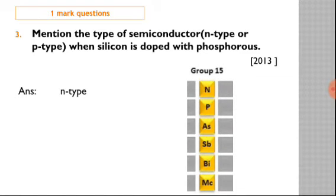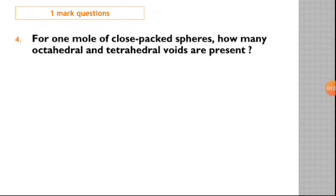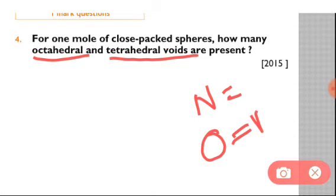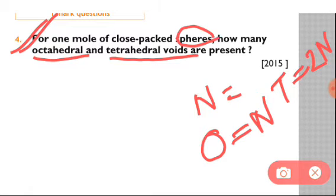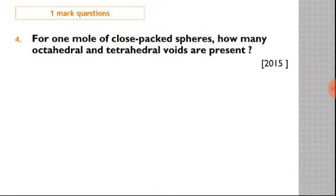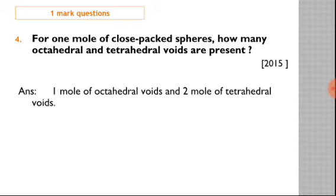Question number four is for one mole of close-packed spheres, how many octahedral and tetrahedral voids are present? This is from 2015. The important point is that octahedral and tetrahedral voids depend on the number of atoms. The octahedral void equals n, and the tetrahedral void equals 2n, where n is the number of atoms.